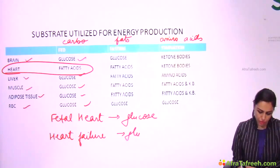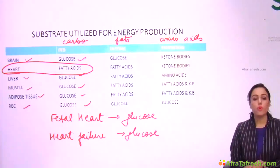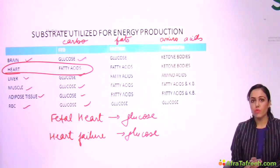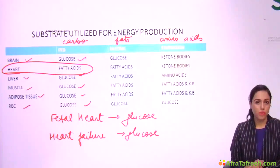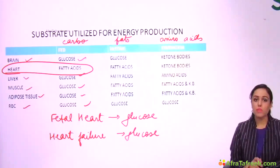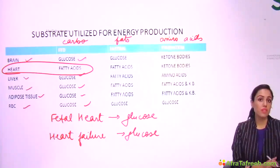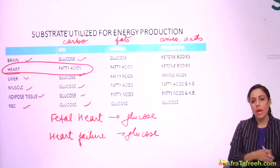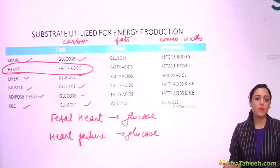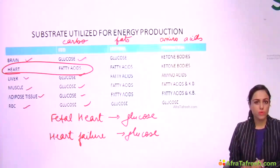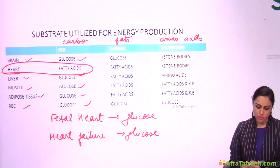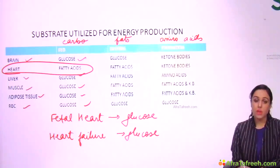However, the fetal heart uses glucose. And if heart failure occurs, the fuel is also shifted back to glucose. So if you have a five-day-old baby, the fuel for the heart is fatty acid — because in the fetus it is glucose, but as soon as birth occurs, the fuel shifts to fatty acid.